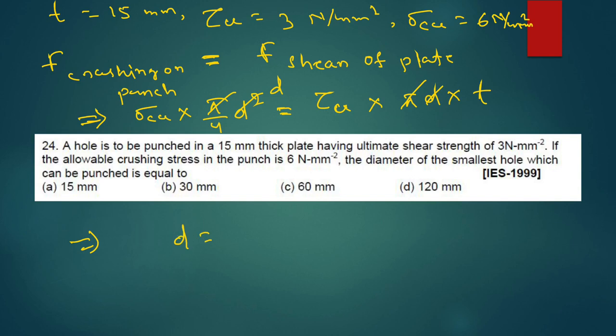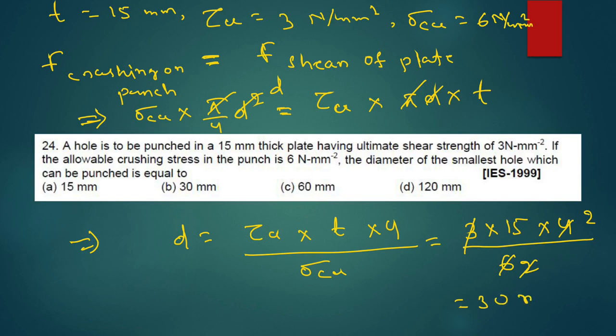So D equal to ultimate shear stress into thickness into 4 divided by crushing stress for punch. It's 6, it's 30 mm. This is minimum diameter of hole. So option B.